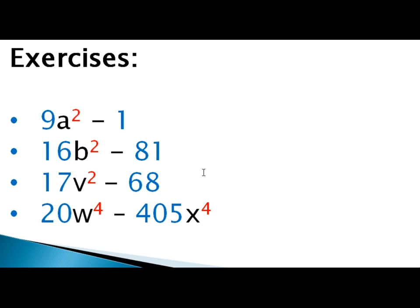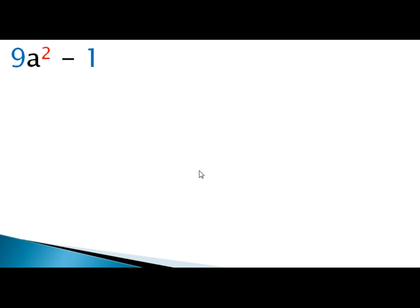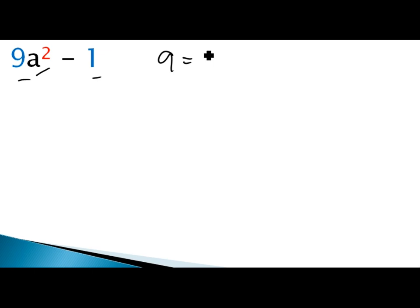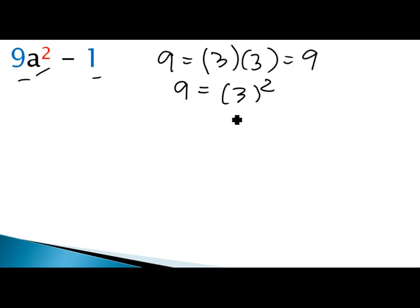Now let's go to the actual exercises. The first exercise is 9a² minus 1. Testing: it has two terms — check. The operator is a minus sign — check. For the third condition, 9 needs a factor that when multiplied by itself returns 9. That's 3, since 3 times 3 equals 9, so we can write 9 as 3².